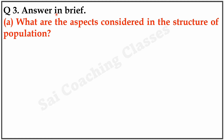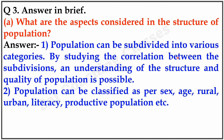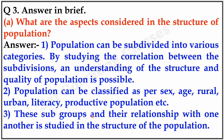Question 3: Answer in brief. What are the aspects considered in the structure of population? Answer: Population can be subdivided into various categories. By studying the correlation between the subdivisions, understanding of the structure and quality of population is possible. Population can be classified as per sex, age, rural, urban, literacy, productive population, etc. These subgroups and their relationships with one another are studied in the structure of the population.